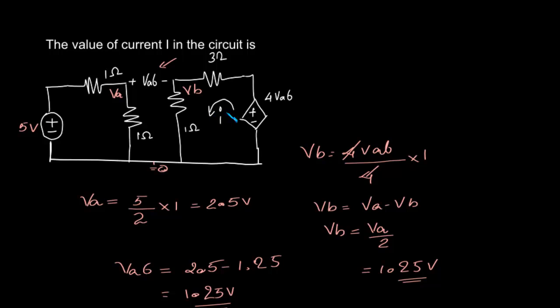Now we have to find out what is this current. Current I is the voltage across the series, 4*VAB, divided by what is the resistance, 4 ohms. So 4 times 1.25 divided by 4, that is 1.25 amperes.